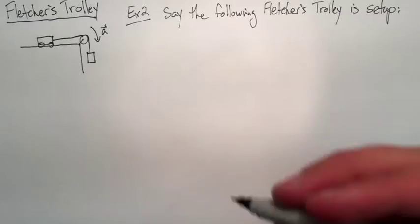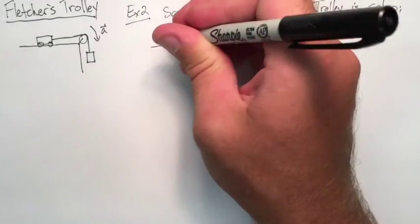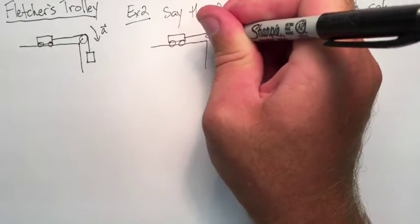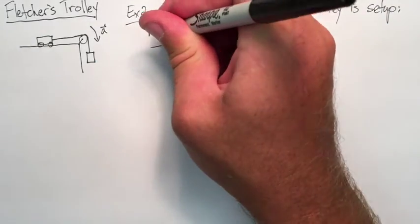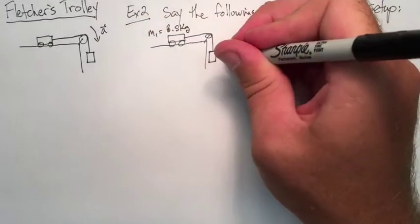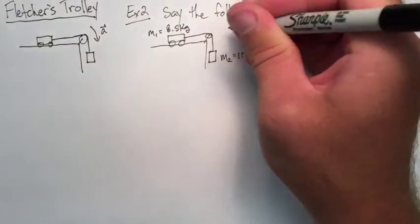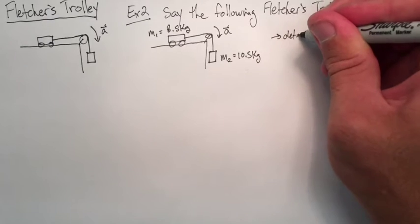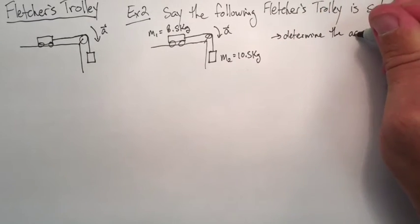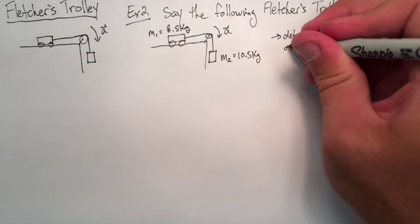So let's say this one is set up here. We'll draw another diagram. So there's our cart on top over the inertialess pulley. M1 is on top, 8.5 kilograms. M2 is hanging over the edge, 10.5 kilograms. Acceleration will be in that direction. We want to determine the acceleration of the system and the tension in the string.